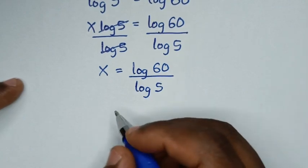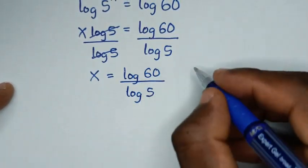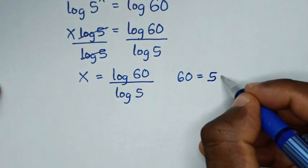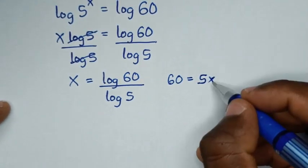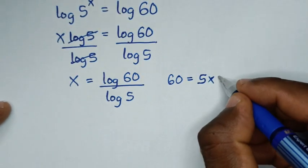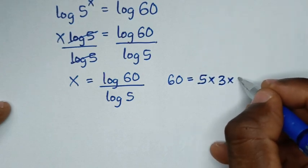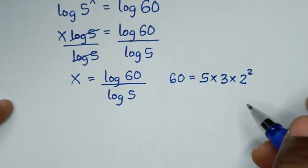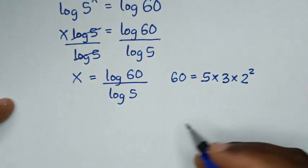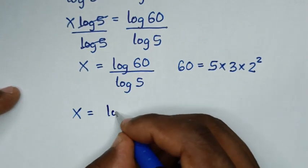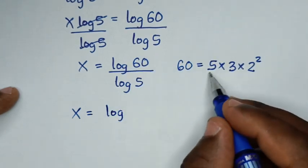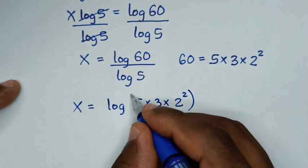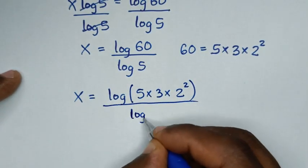Then in the next step, from here 60 is equal to — because here we have 5 — so 60 is the same as 5 times 12, and 12 is 3 times 4, and 4 is 2 squared. Here we'll place it into prime number factors. So x is equal to log of 5 times 3 times 2 squared, all over log of 5.